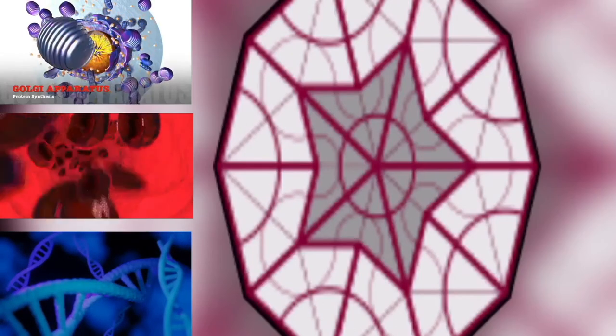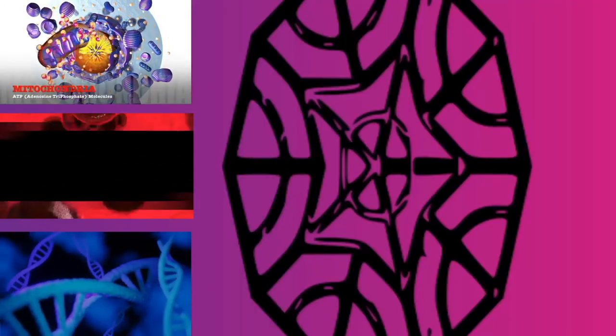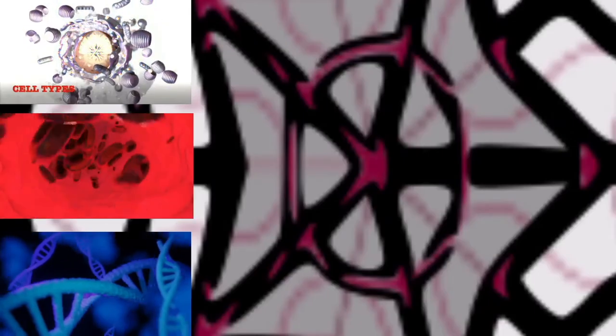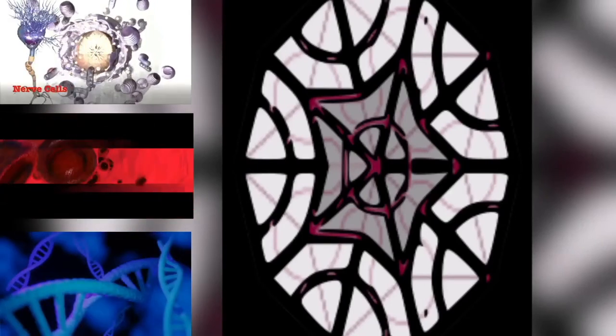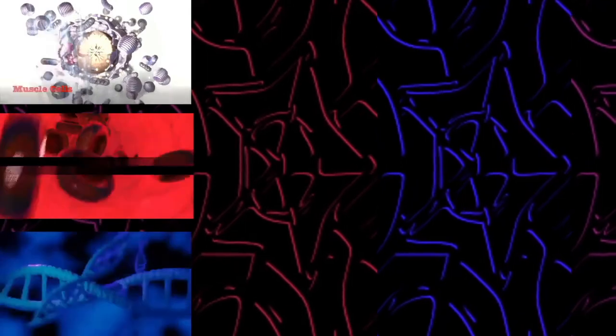Eukaryotes only appear in the fossil record later and may have formed from the endosymbiosis of multiple prokaryote ancestors. The oldest known fossil eukaryotes are about 1.7 billion years old; however, some genetic evidence suggests eukaryotes appeared as early as 3 billion years ago.